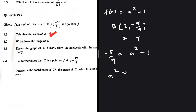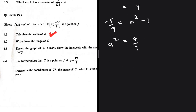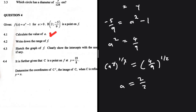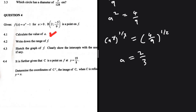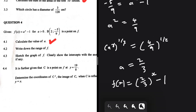So a squared equals 4/9. Taking the square root of both sides — 4 to the power one-half is 2, and 9 to the power one-half is 3 — so a equals 2/3. At this point we know that f(x) equals (2/3) to the power x, minus 1. That is question 4.1.